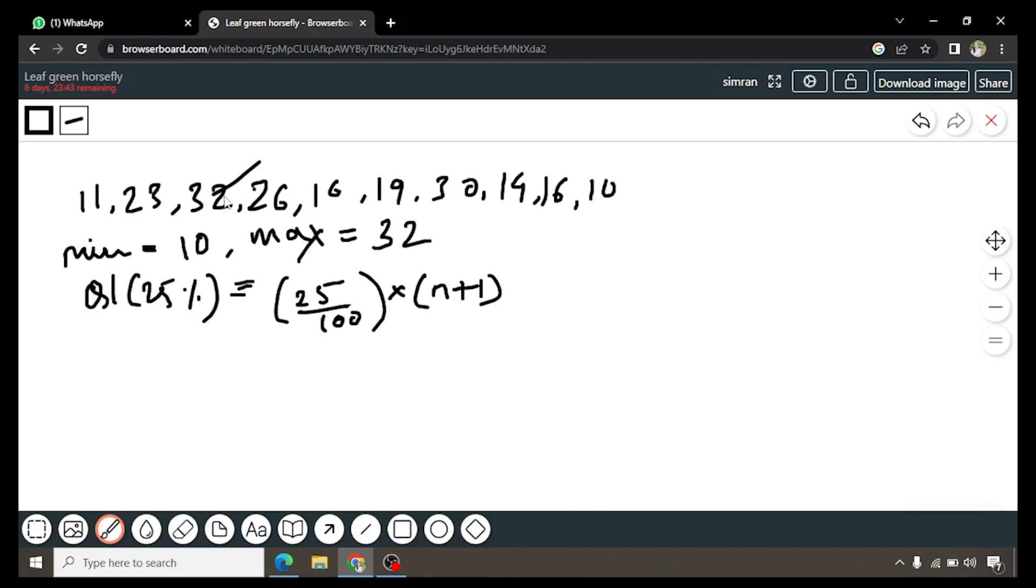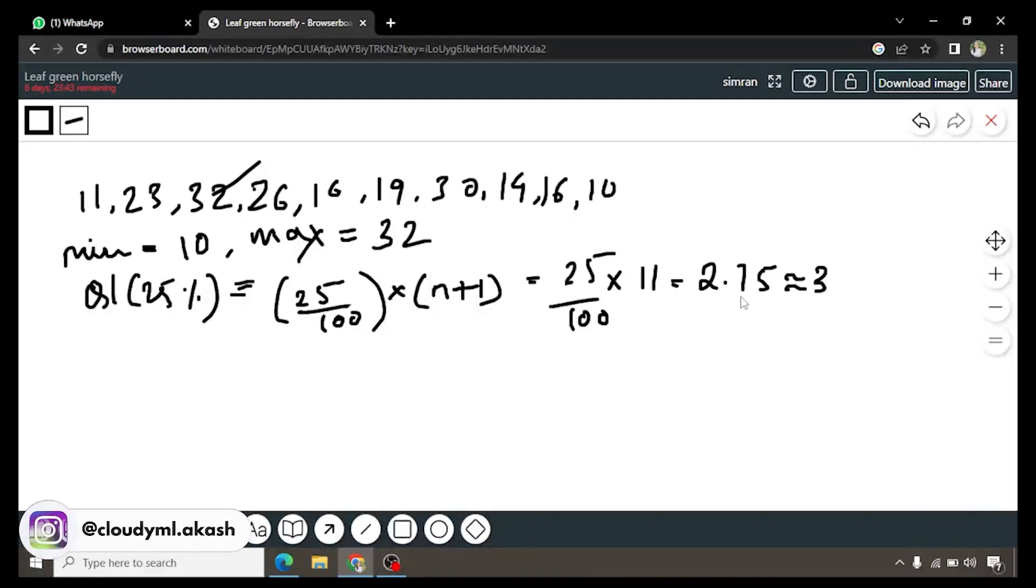So in our case there are 1, 2, 3, 4, 5, 6, 7, 8, 9, 10 elements. So here we have 25 upon 100 into 11. So by solving this we will get the value as 2.75 which is closely equal to 3. So the 3rd value of the data will represent the 25th percentile. Here 3rd value, 3rd value as in arranging in the ascending order. So let's arrange it first.